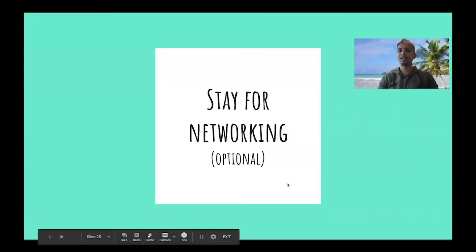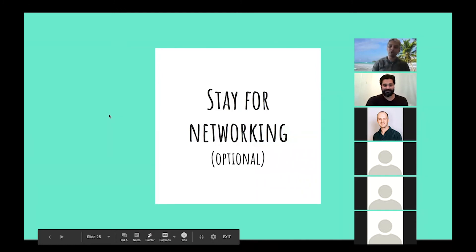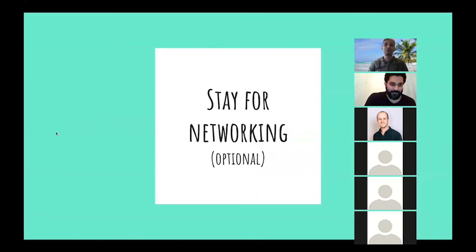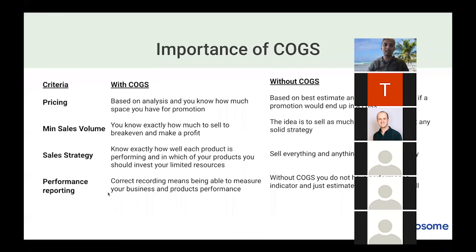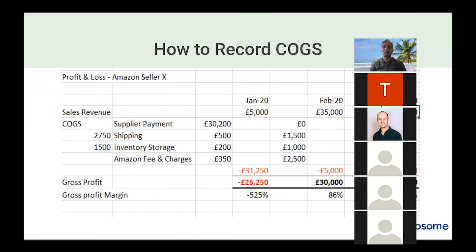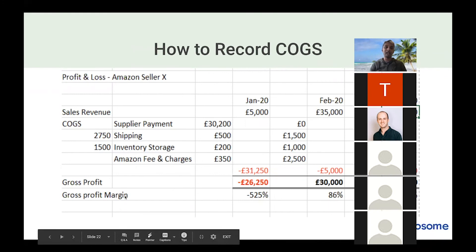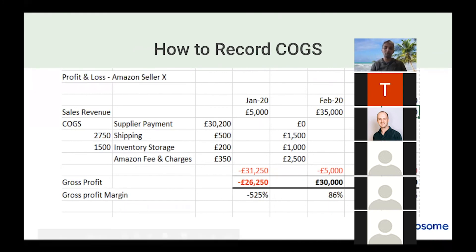One important tip from this presentation is about recording supplier payments. Many Amazon sellers have been accounting for supplier payments as expenses, causing huge dips and spikes in monthly profits — a loss one month and a massive profit spike the next. This is a significant issue, and it's worth going back to your accountant to correct this in your bookkeeping.